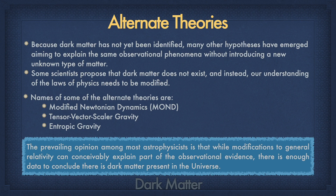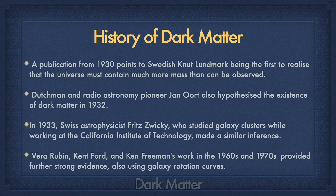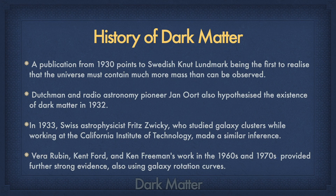World's leading space research organizations are constantly working towards finding dark matter particles. In a publication in 1930, a Swedish astronomer mentioned that there must be more mass in the universe than we generally observe. In 1932, Jan Oort, a radio astronomy pioneer, also hypothesized the existence of dark matter. Fritz Zwicky, while studying the Coma Cluster in 1933, made a similar inference. Vera Rubin, Kent Ford and Ken Freeman provided strong evidence of dark matter in 1970 using galaxy rotation curves. Dark matter remains an unresolved cosmological mystery to date, and only time will tell which laws of physics will change and what secrets of the universe will unveil when scientists crack this hard nut.